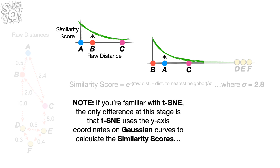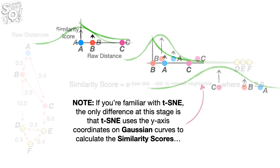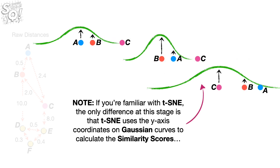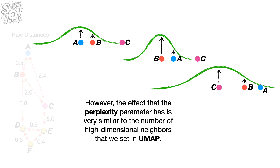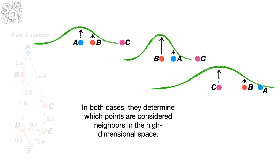Note, if you're familiar with T-SNE, the only difference at this stage is that T-SNE uses the y-axis coordinates on Gaussian curves to calculate the similarity scores. And the widths and heights of the curves are determined by the perplexity parameter. However, the effect that the perplexity parameter has is very similar to the number of high-dimensional neighbors that we set in UMAP. In both cases, they determine which points are considered neighbors in the high-dimensional space.